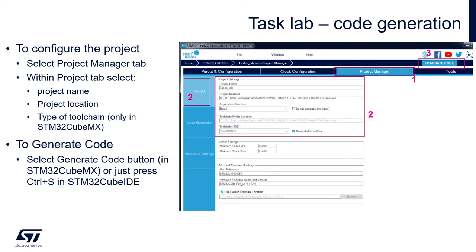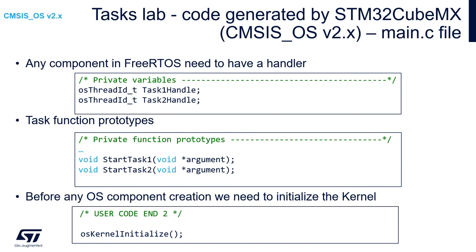The last step within CubeMX configuration is to configure the project and generate the code. Go to the Project Manager tab, select the project name, project location, and toolchain type. In CubeMX you can select different toolchains such as EWARM, AC6, or CubeIDE. Within the CubeIDE environment there is only one option: STM32CubeIDE. Click the Generate Code button in the upper right corner for STM32CubeMX, or press Generate Code within STM32CubeIDE.